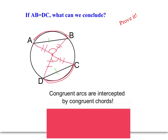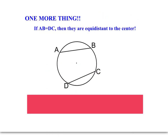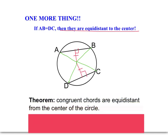The converse is also true: if you knew those two arcs were equal, then you'd know those chords were also congruent. One more thing: in the same situation, if those two chords are congruent, we can deduce that they are equidistant from the center — meaning the perpendicular distances from the center to each chord are equal. So congruent chords are equidistant from the center of the circle. And that's all for today.